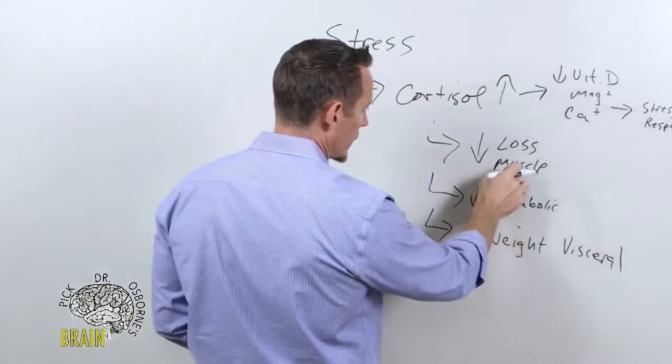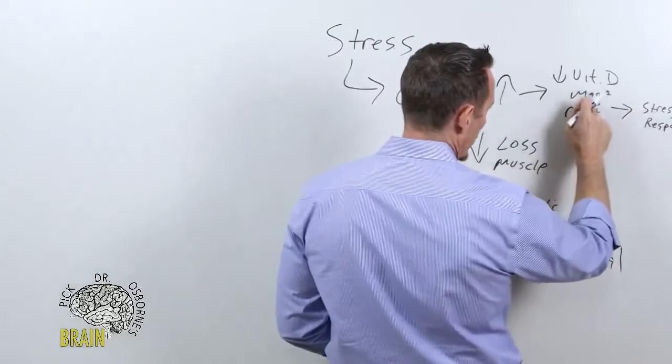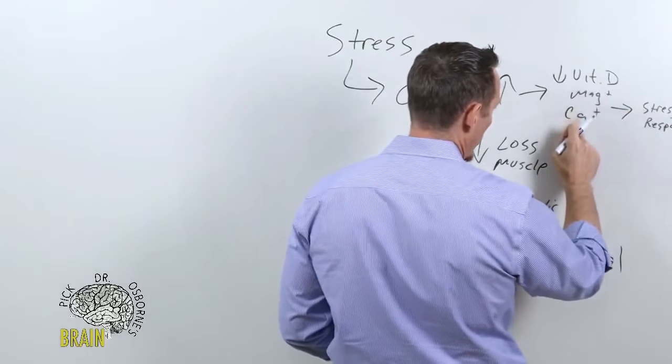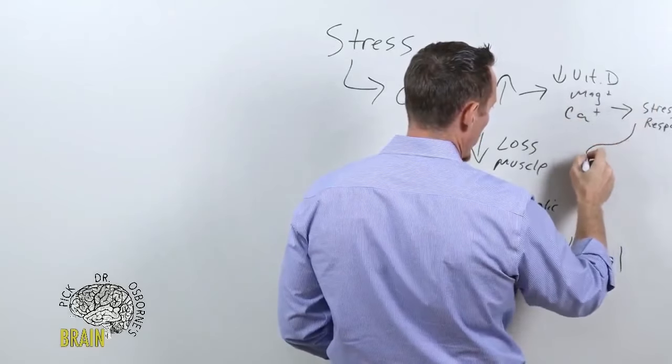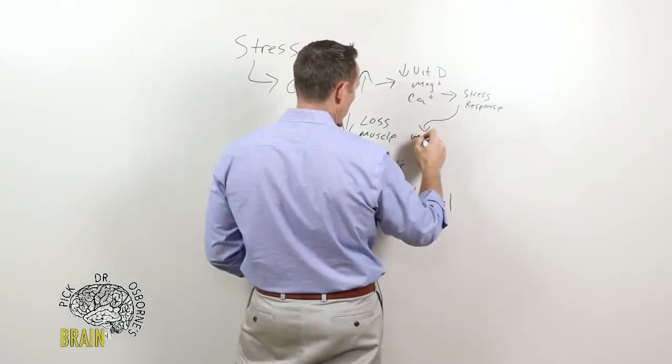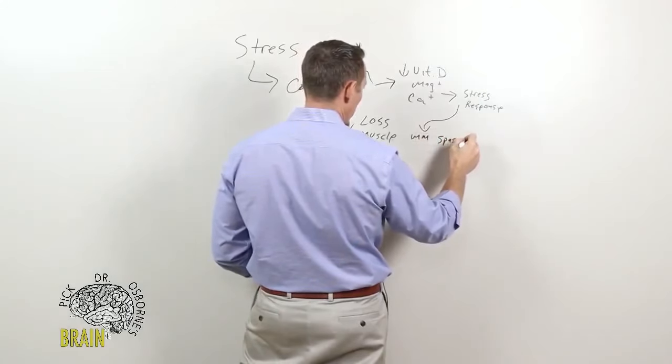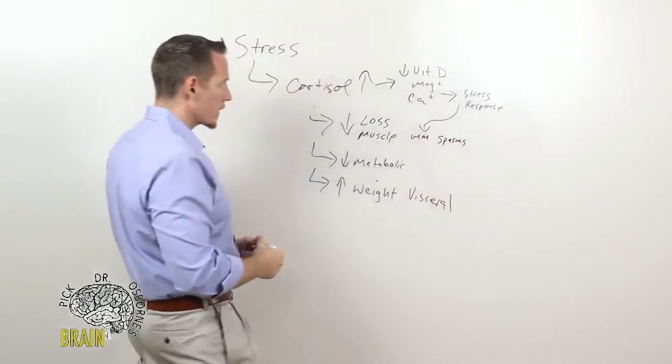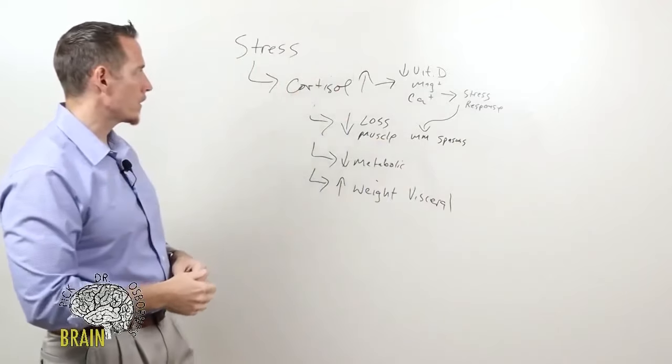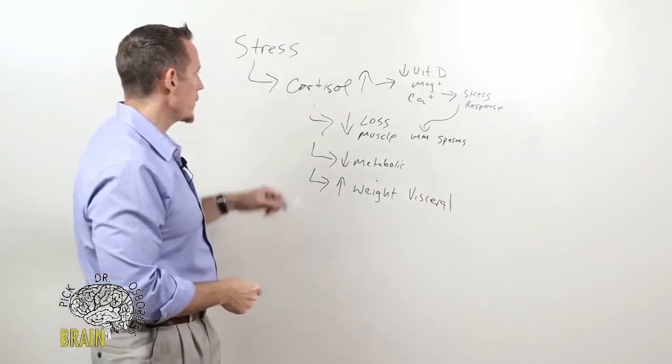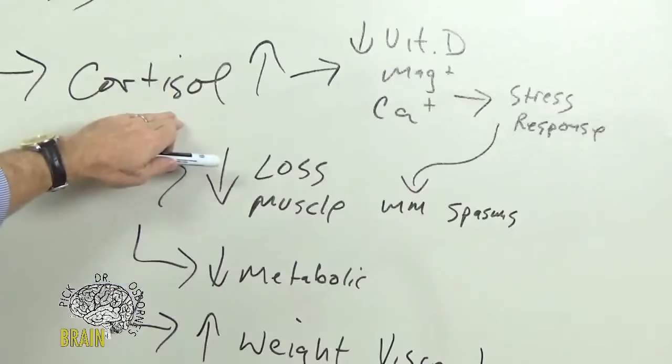A lot of people will start to develop, aside from developing that muscle loss, under the loss of electrolytes that are important for muscle function, we also get muscle spasms. Muscles start to shorten, they start to spasm, they start to twitch, they start to become prone to injury.